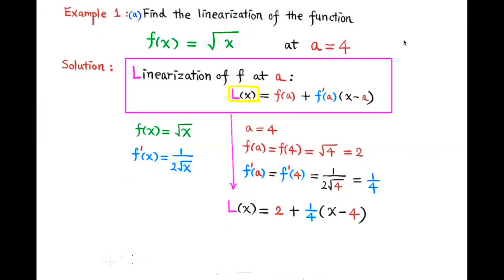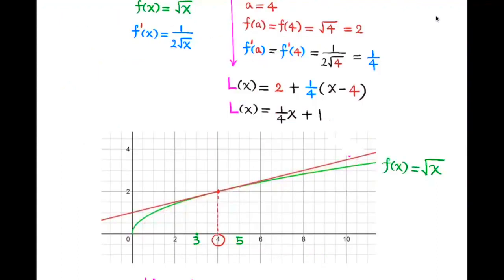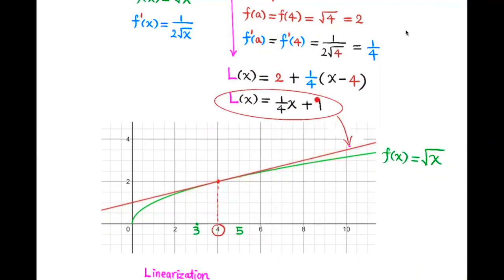Substituting, we get L(x) equals 2 plus 1/4 times the quantity x minus 4. Putting this in slope-intercept form, the linearization of the function is L(x) equals 1/4 times x plus 1. Now let's graph f(x) equals the square root of x and its tangent line at x equals 4. We see that near x equals 4, the tangent line and the curve itself are very close to each other.